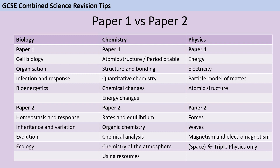It's now less than a month until GCSE biology paper 1, so you probably have quite a clear idea in your head of which topics you're expecting to see on which paper. For biology you know that in paper 1 you're expecting questions about cell biology, organisation, infection and disease, and bioenergetics — which is photosynthesis and respiration — and then in paper 2 you're going to find homeostasis, genetics, evolution, and ecology.